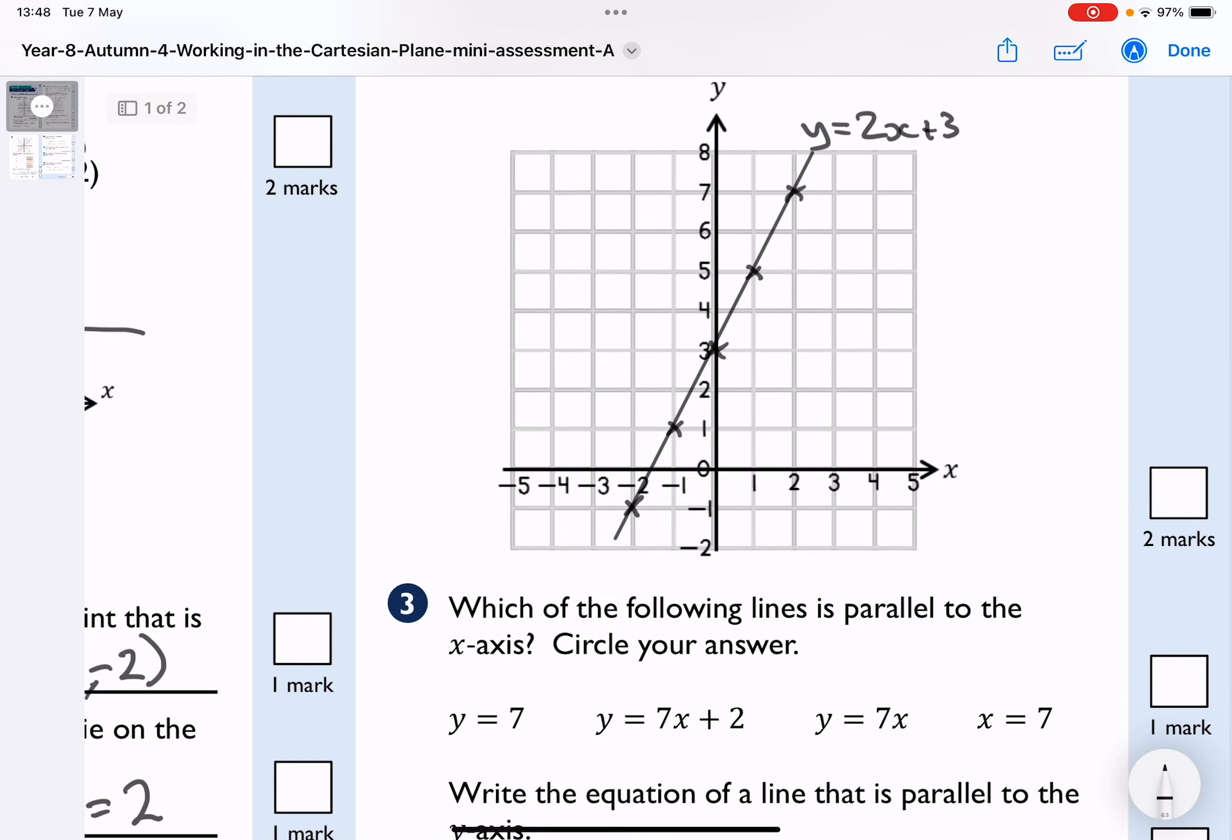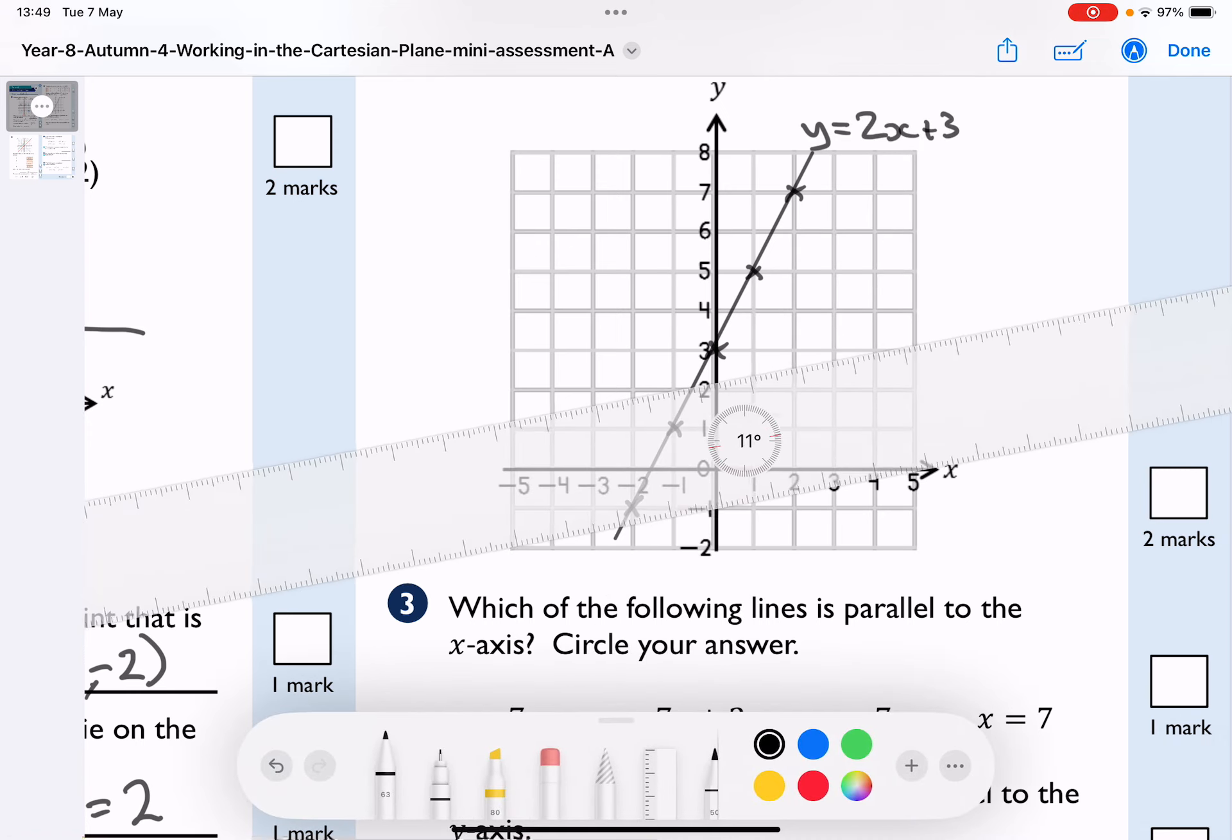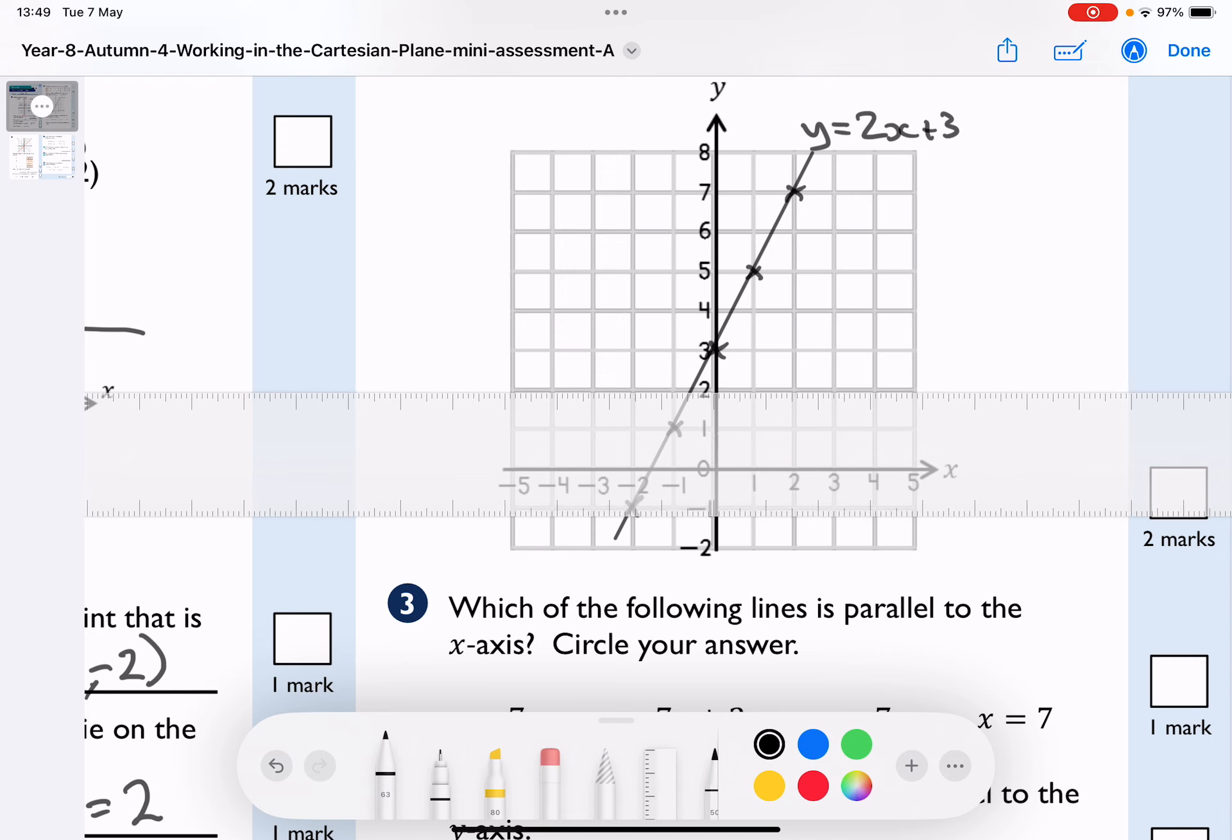Question 3. Which of the following lines is parallel to the x-axis? If I just do a quick example of that, and in fact, I'm just going to get my ruler. That is parallel to the x-axis. And here I can see that my ruler is going through where y equals 2.